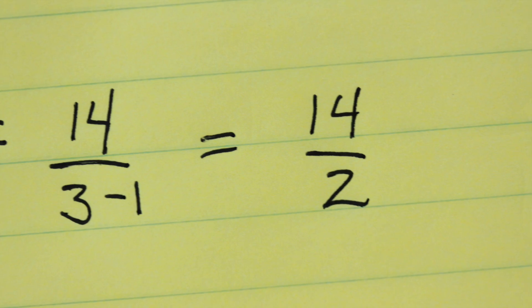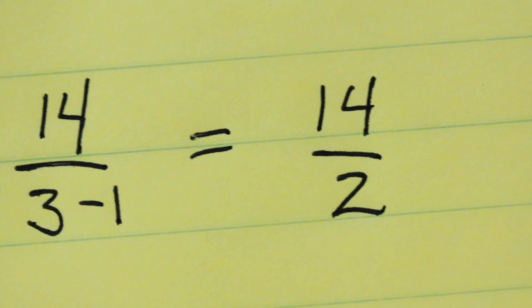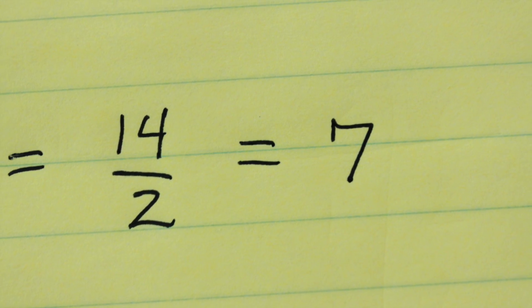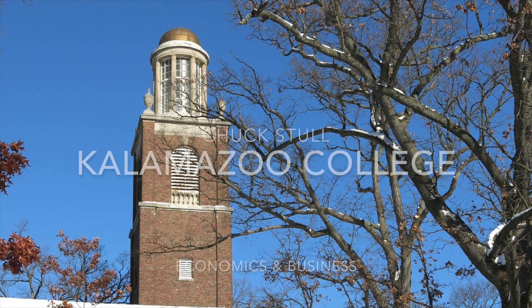In this case, n is equal to 3. So 3 minus 1 is 2. 14 over 2 is equal to 7. So our covariance, in this case, is 7.